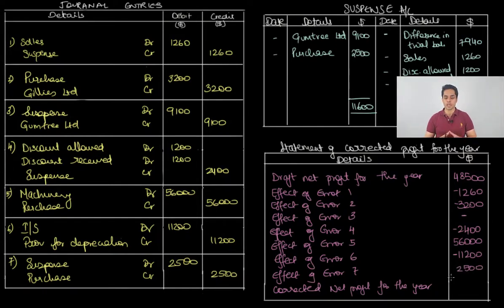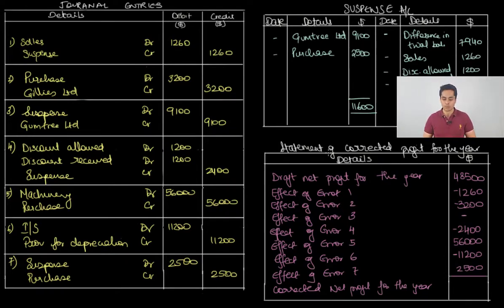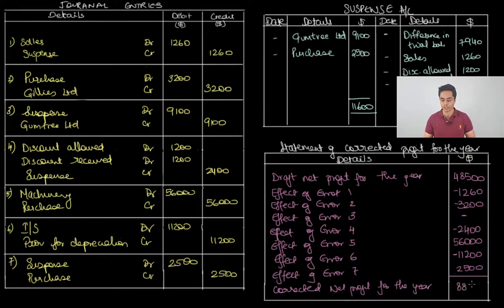Starting from a draft net profit of 48,500, when we add and subtract all these adjustment amounts, the corrected net profit for the year is 88,940.